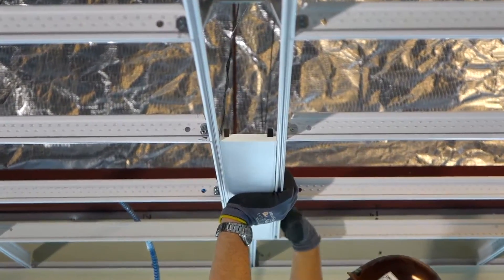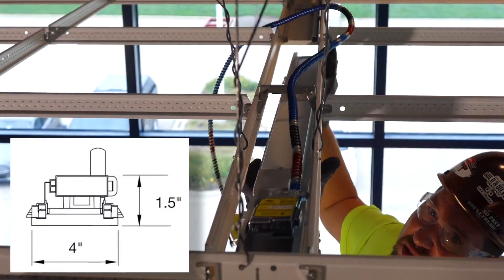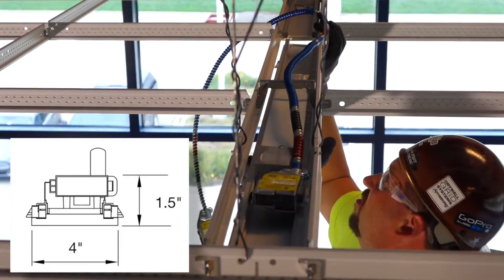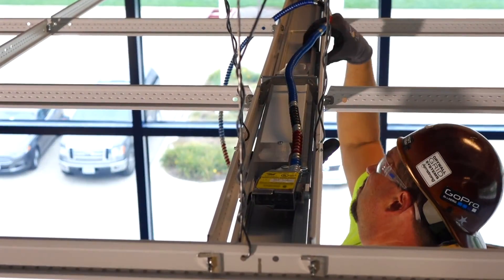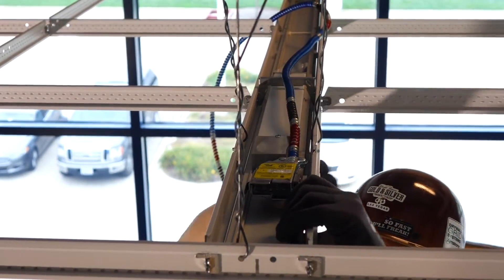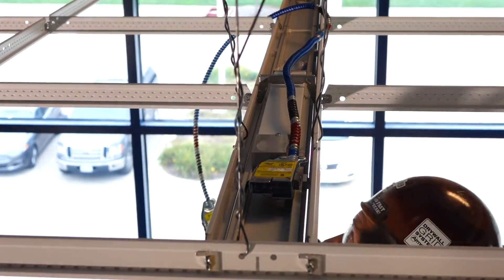Zero-plenum fixtures are only an inch and a half tall, so they never extend above the grid. If the grid fits, the light fits. And gone are the days wondering if there is enough plenum depth to house your fixtures.